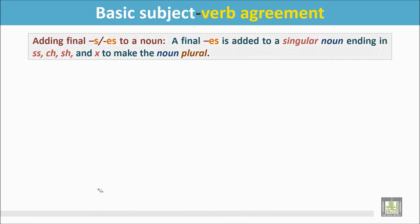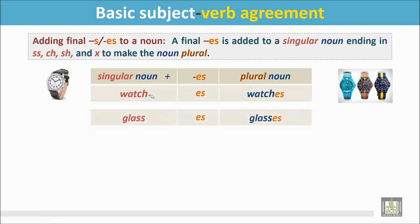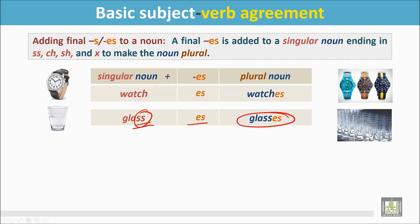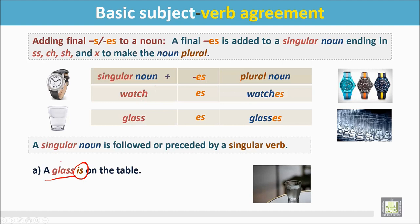Adding a final ES to a noun. A final ES is added to a singular noun ending in double S, CH, SH, or X to make it plural. For example, 'watch' ends in CH, so we add ES: 'watches.' 'Glass' ends in double S, so we add ES: 'glasses.' A singular noun is followed or preceded by a singular verb: a glass is on the table, or there is a glass on the table — where 'glass' is preceded by the singular verb 'is.'